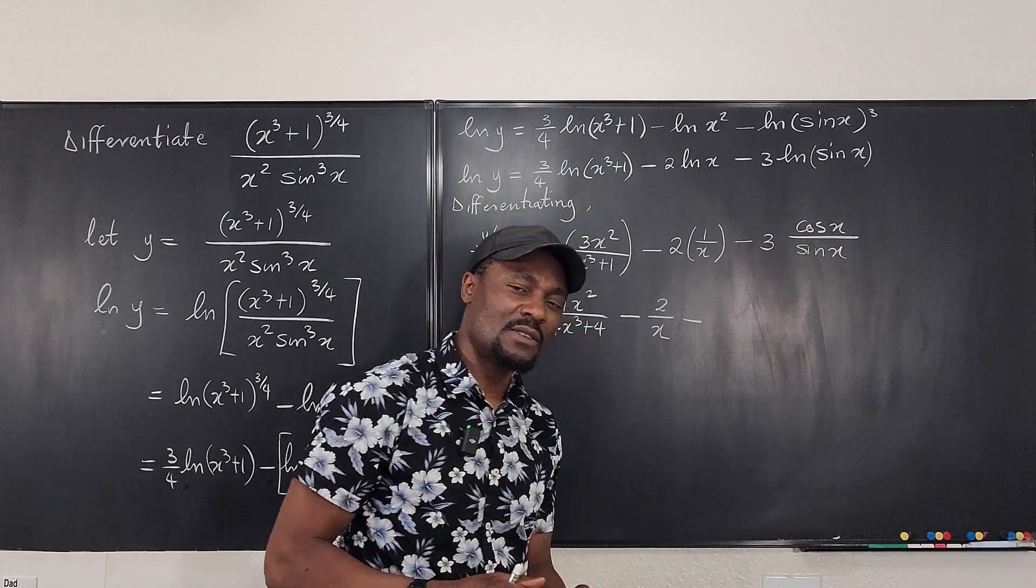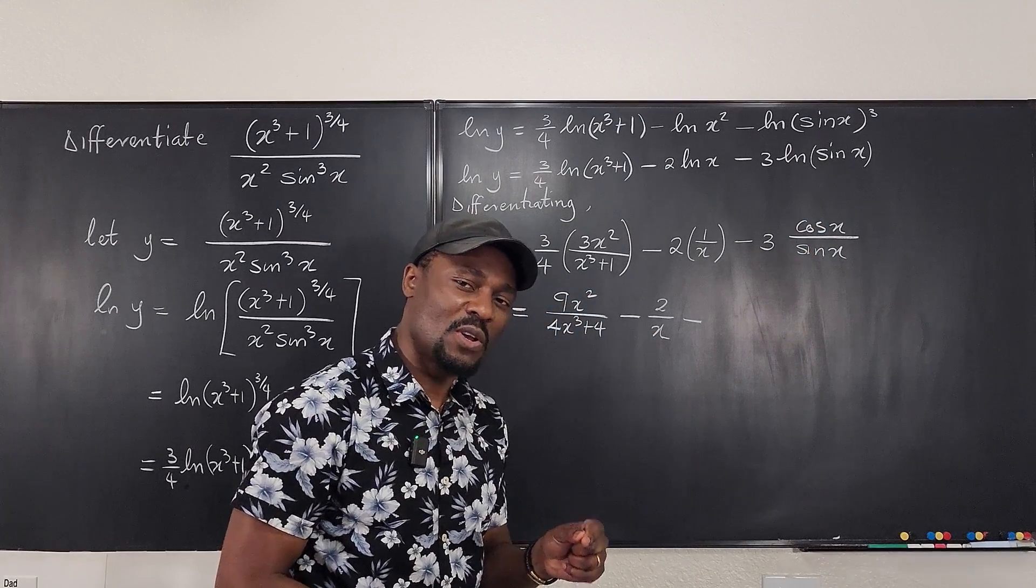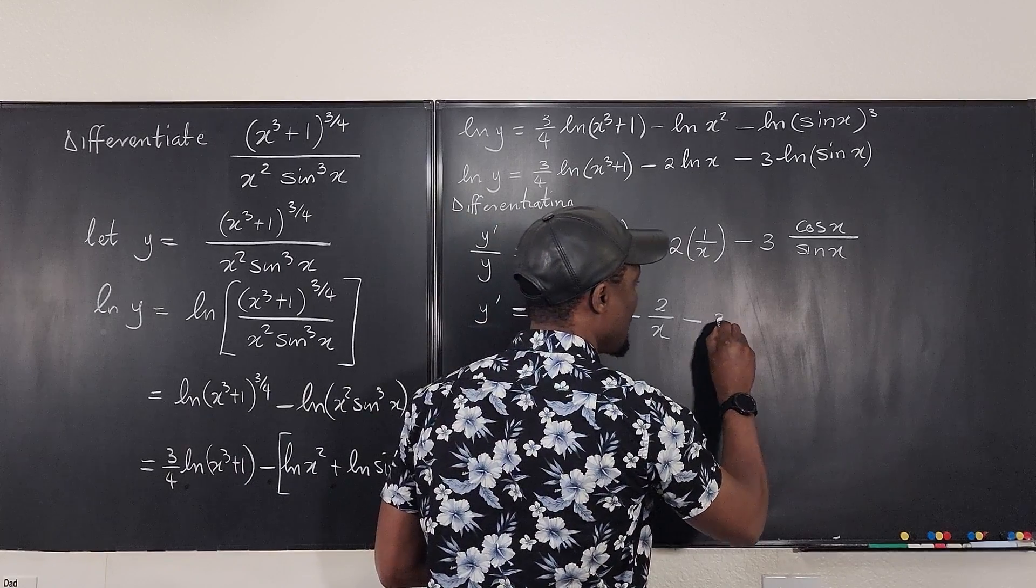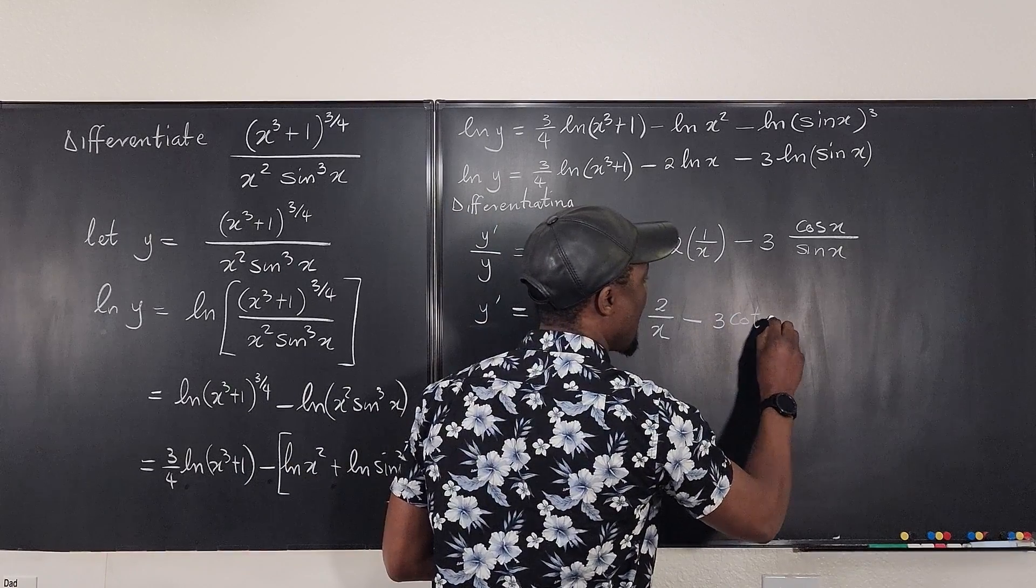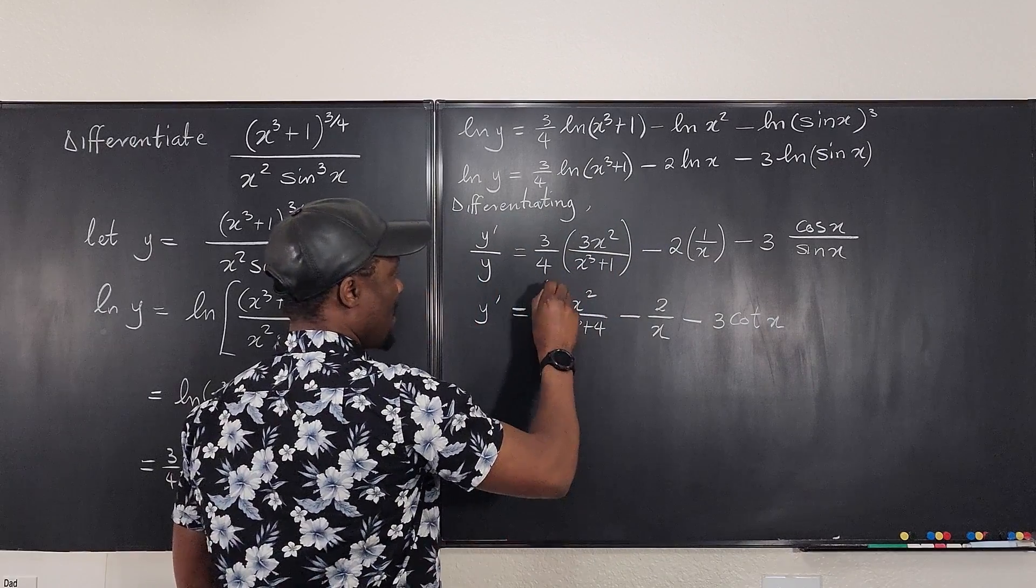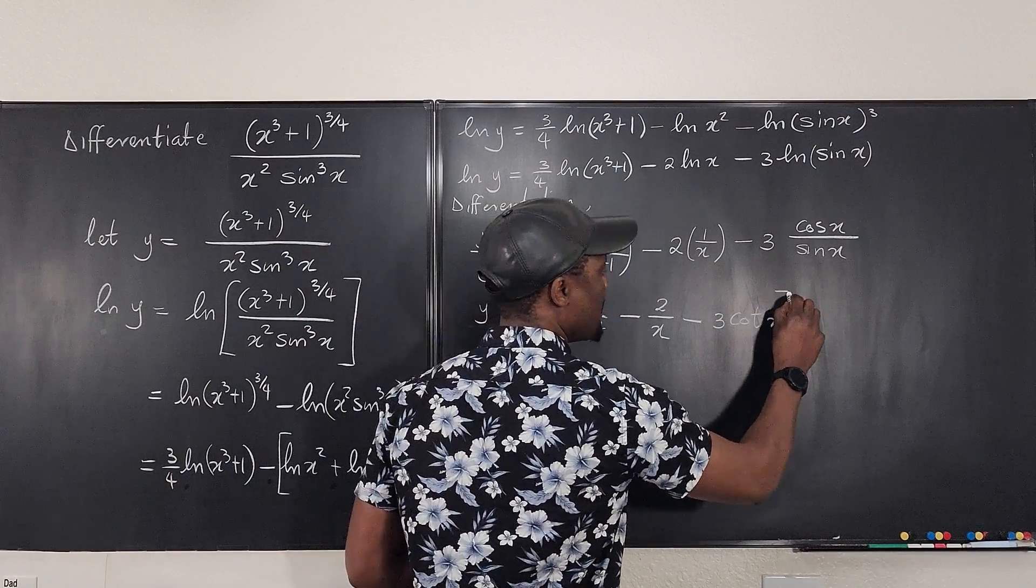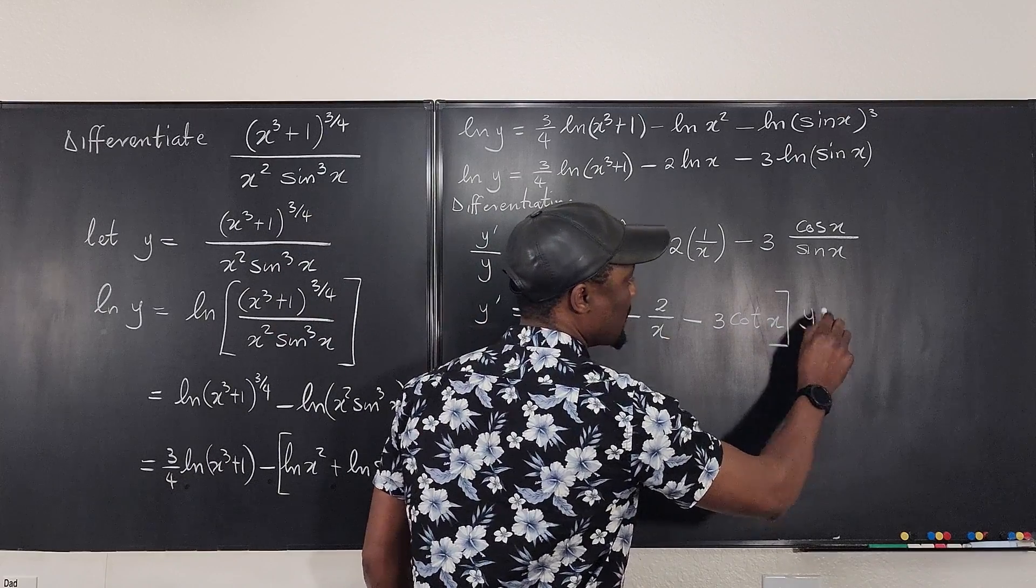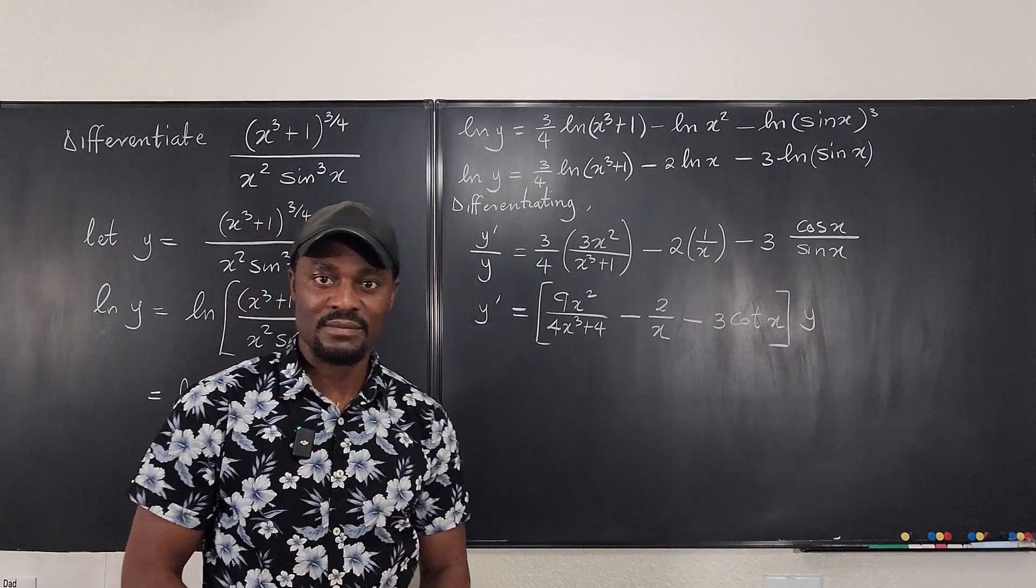Well, we know that cosine x over sine x is the reciprocal of tangent, which is cotangent x. So it's going to be 3 cot x. Nice. Remember, we're multiplying both sides by y. Well, that's it.